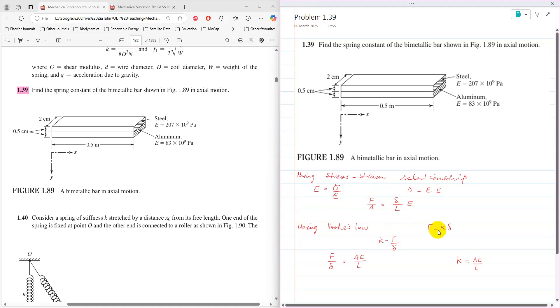Therefore K equals F over delta. By rearranging the stress-strain relationship for F over delta and substituting into Hooke's law, we get K equals AE over L.